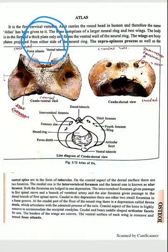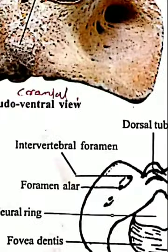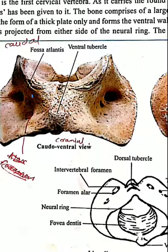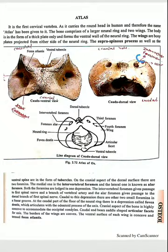The border of the wings is convex. The ventral surface of each wing is concave and termed as the fossa atlantis. On the dorsal side, the alar foramen is present, and just near to it the intervertebral foramen is present. So this is about the atlas.